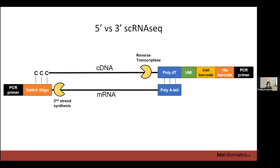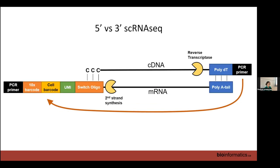There are two different versions of 10x Genomics: three-prime and five-prime sequencing. The difference is which oligonucleotide we attach the barcodes to. For five-prime single cell RNA-seq, attach all the barcodes to the switch oligonucleotide — everything else is exactly the same.